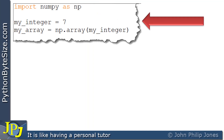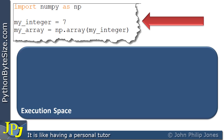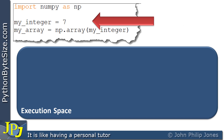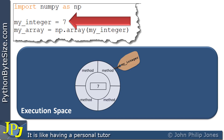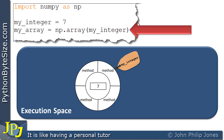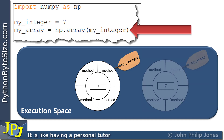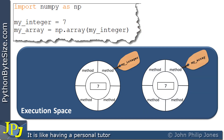Let's consider this snippet of the program. When it executes, we get what I refer to as an execution space — this is where all the objects exist when the program is running. The first statement produces an integer class object with 7 stored at its core, labeled my_integer. The second statement produces an instance of the ndarray class, shown here, with the value 7 at its core because that's what I passed in. It has the name my_array. So we have two objects.